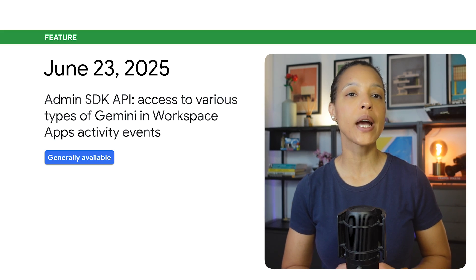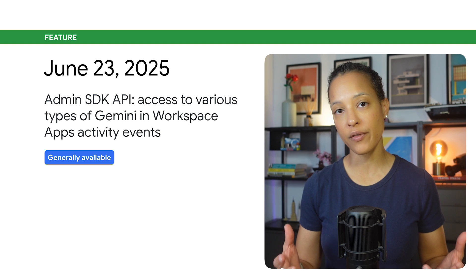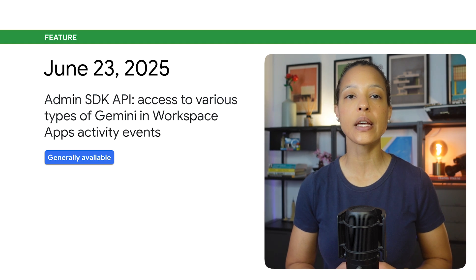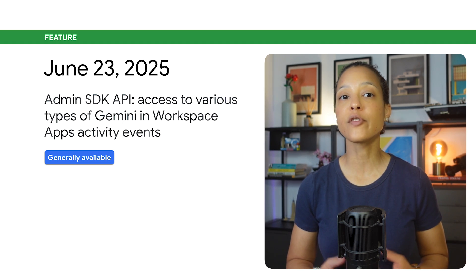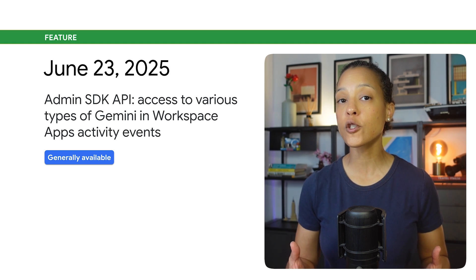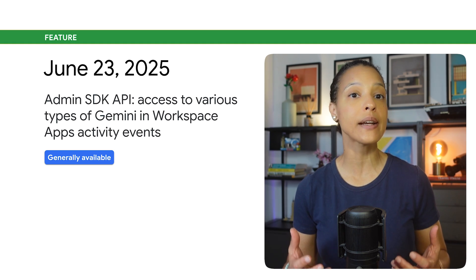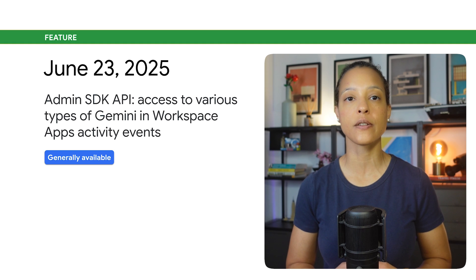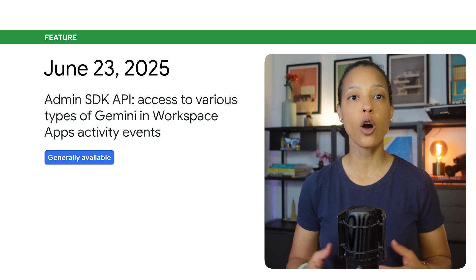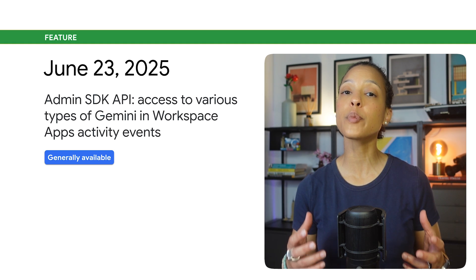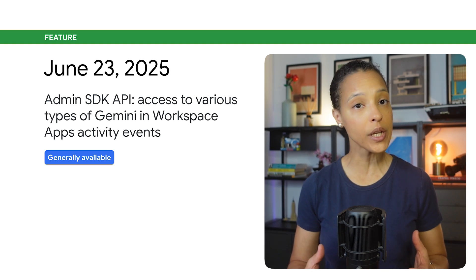Through the Reports API, which is part of the Admin SDK, you can list various types of Gemini in Workspace apps activity events. Gemini in Workspace apps logs will be available starting June 20, 2025. From this day forward, a rolling history of up to 180 days will be maintained.